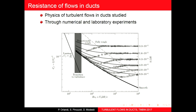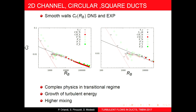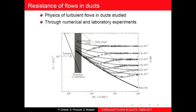This is the well-known Moody diagram. You can see the laminar region, where the friction coefficient CF is decreasing proportionally to the Reynolds number. Then there is the smooth wall region, with a power law of CF versus the bulk Reynolds number.